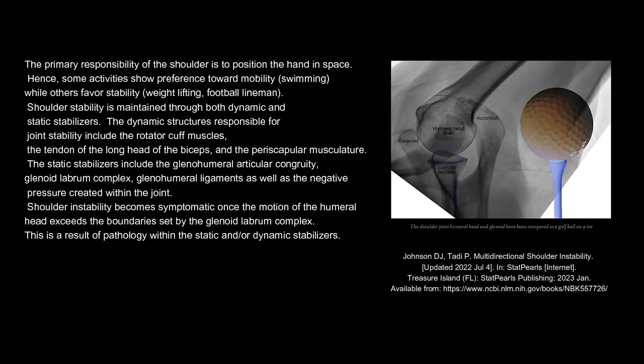Shoulder stability is maintained through both dynamic and static stabilizers. The dynamic structures responsible for joint stability include the rotator cuff muscles, the tendon of the long head of the biceps, and the periscapular musculature. The static stabilizers include the glenohumeral articular congruity, glenoid labrum complex, glenohumeral ligaments, as well as the negative pressure created within the joint. Shoulder instability becomes symptomatic once the motion of the humeral head exceeds the boundaries set by the glenoid labrum complex, as a result of pathology within the static and/or dynamic stabilizers.